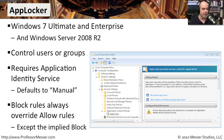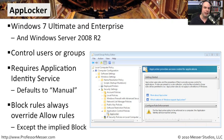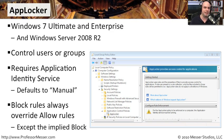One nice thing about AppLocker is that block rules will always override allows. If it says to block anything anywhere, it's going to take that block. You can't override a block with an allow in AppLocker, and that's a little bit different than the software rules in the previous video. When you turn on AppLocker, everything is blocked unless you set up some rules. If you have a specific block that you have added, that is always going to override any allow rules that you create inside of AppLocker.